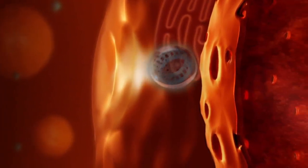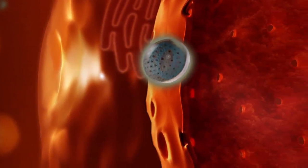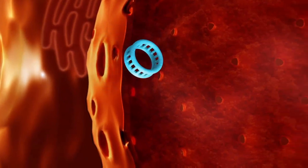A plasmid is introduced into the cell where upon entry to the nucleus, the components necessary to perform CRISPR gene editing are manufactured.